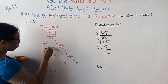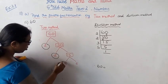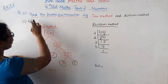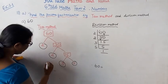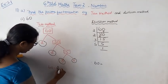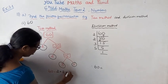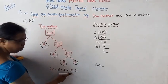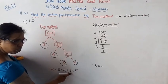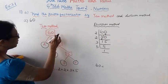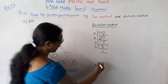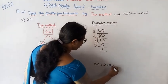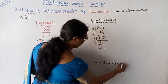The prime numbers found are 2, 2, 3, 5. Find the prime factorization of 60: two into two into three into five. Two 2's are 4, 4 threes are 12, 12 fives are 60. Division method: 2 into 2 into 3 into 5.